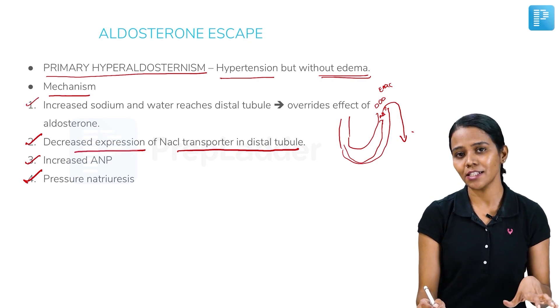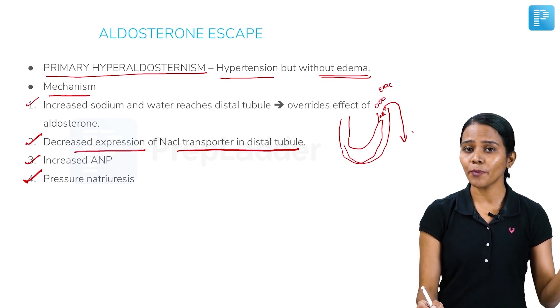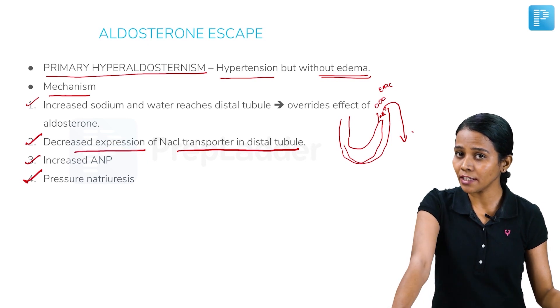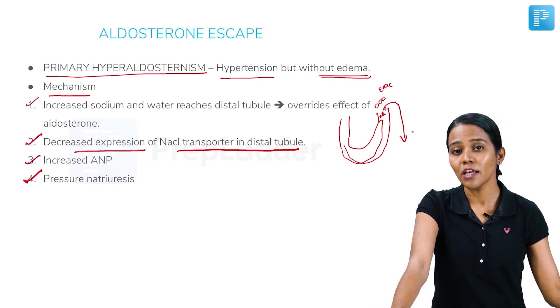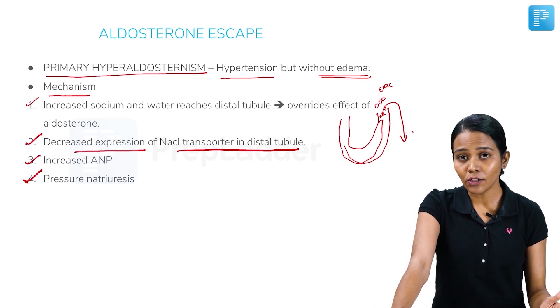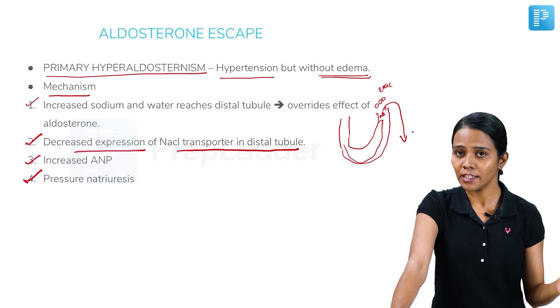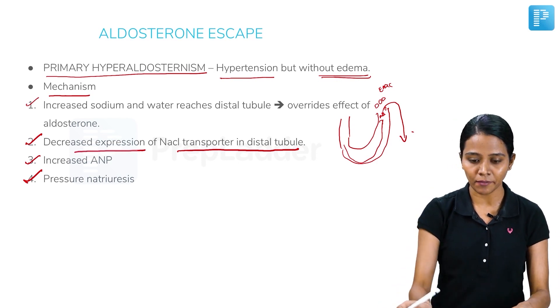Because of all these mechanisms, even though primary hyperaldosteronism has increased aldosterone, there is not much increase in sodium or volume. So the patient is not going to have edema.